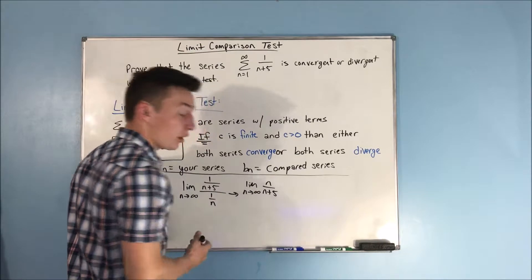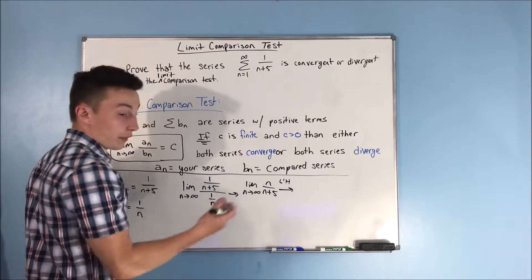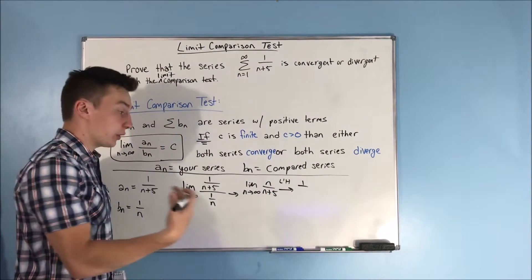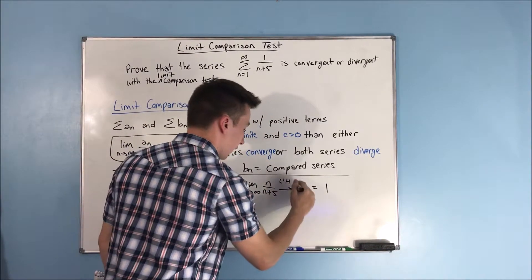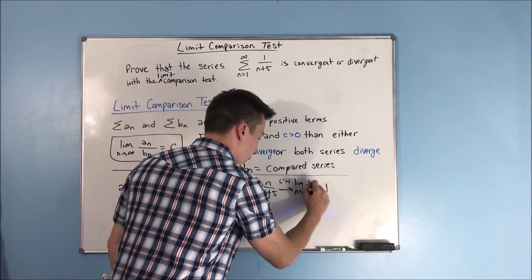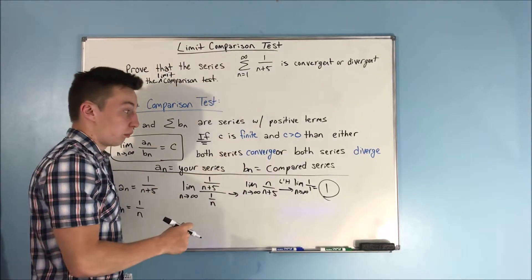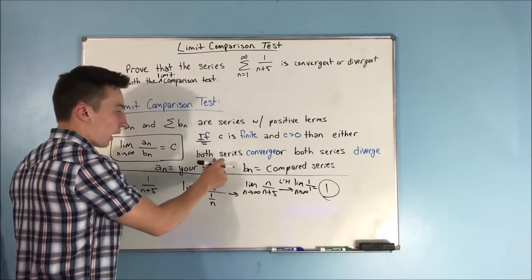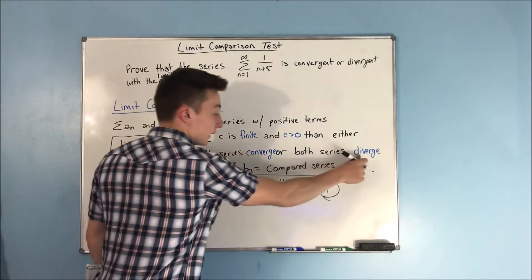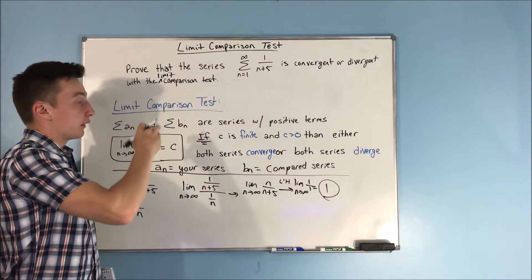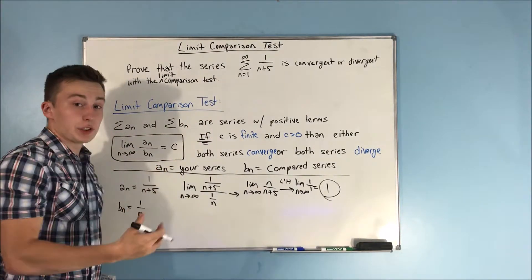You can just divide everything by n, or use L'Hôpital's rule. Using L'Hôpital: the derivative of n is 1, and the derivative of n plus 5 is also 1, so you get 1 over 1, which equals 1. That's a finite number and it's greater than 0, so either both series converge or both series diverge. We know that the sum from n equals 1 to infinity of 1 over n diverges, so we can write that this series is divergent by the limit comparison test.